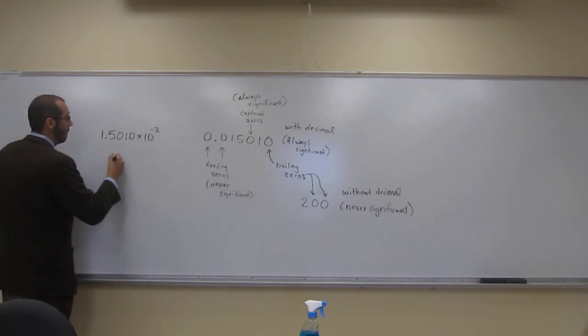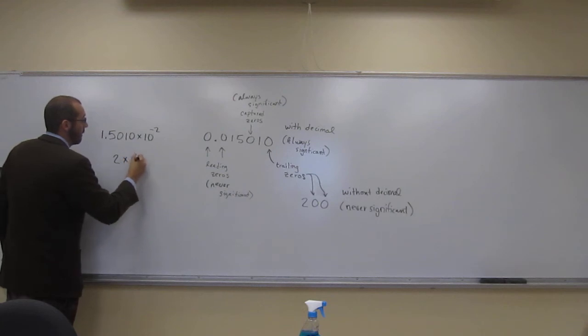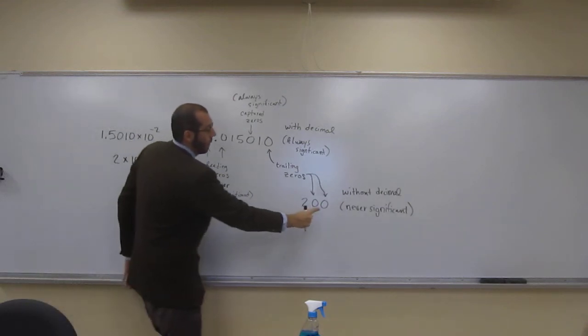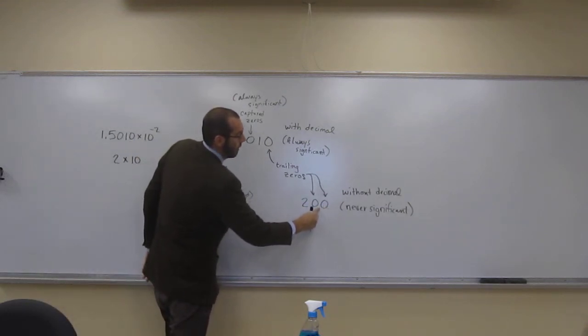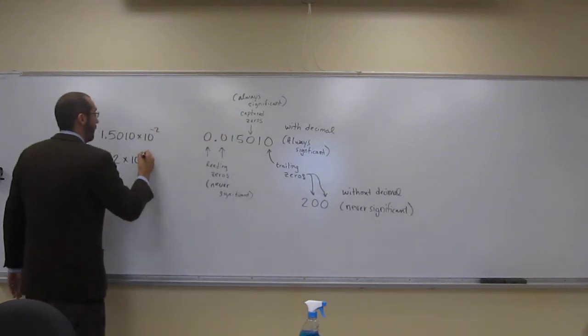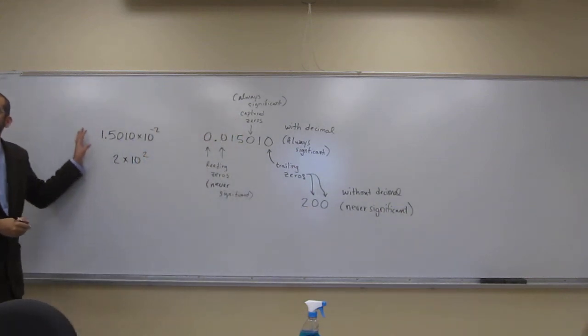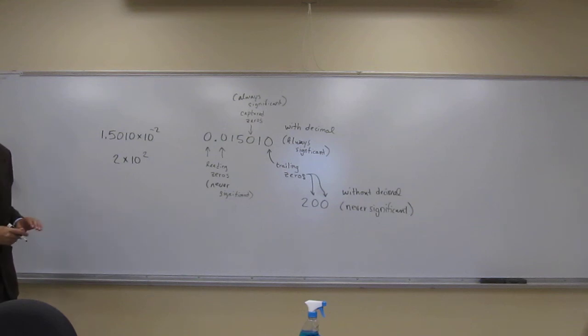So it's going to be 2 times 10 to the, we got to pretend there's a decimal there and say 1, 2. Does everybody understand now? So that kind of is revealing about significant digits when you put them into scientific notation.